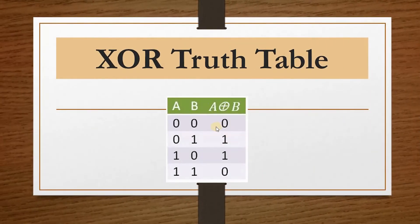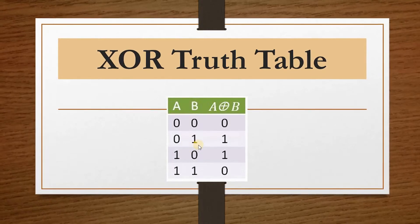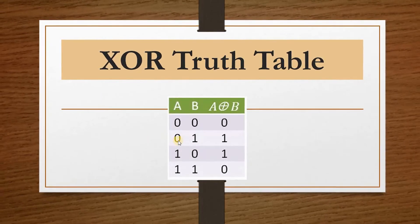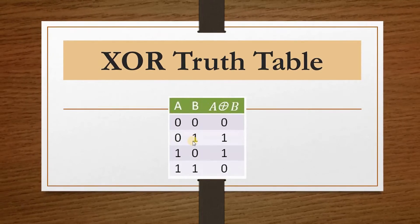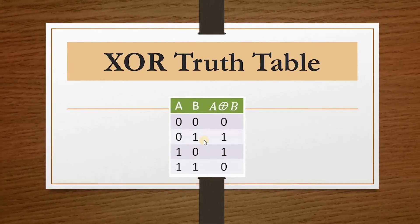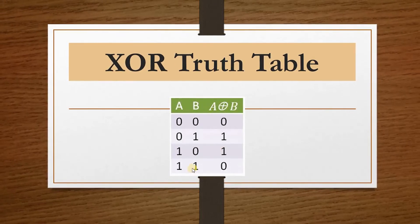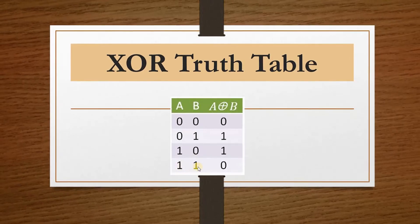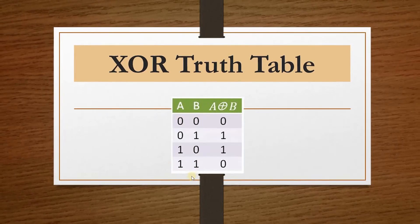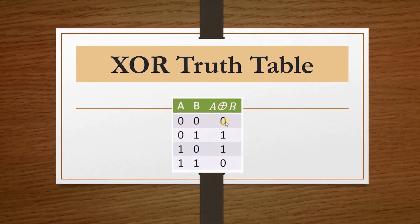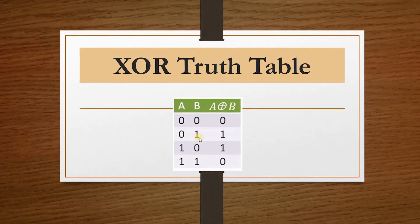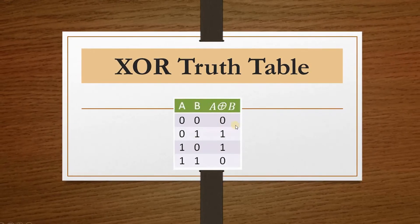Now for the XOR truth table: if A and B — both operand inputs — are different, for example A is zero and B is one, they are totally different, so the XOR output is one. Similarly, if A is one and B is zero, the XOR output is one. On the other hand, if both operands have the same input — one and one, or zero and zero — the XOR output is zero. Different inputs give one; same inputs give zero.